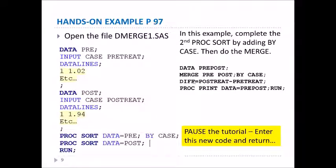Here's a hands-on example on page 97. Open up the file called dmerge.sas. You'll notice there are two datasets created. The dataset pre has the variables case and pretreat, and the dataset post has case and posttreat. So case is the key identifier we're going to use to merge the datasets. Before we merge them we have to sort them, so we do proc sort on both datasets pre and post. Then you'll fill in the missing code, and add the merge statement: data prepost, merge pre and post by case. At the same time we're going to create a new variable called diff, which is going to be posttreat minus pretreat, and then print out the results.